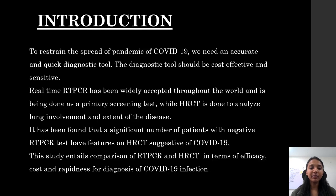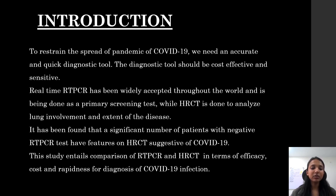To restrain the spread of the pandemic of COVID-19, we need an accurate and quick diagnostic tool. The diagnostic tool should be cost-effective and sensitive. Real-time RT-PCR has been widely accepted throughout the world and is being done as a primary screening test, while HRCT is done to analyze lung involvement and extent of the disease. This study entails comparison of HRCT and RT-PCR in terms of efficacy, cost, and rapidness for diagnosis of COVID-19 infection.